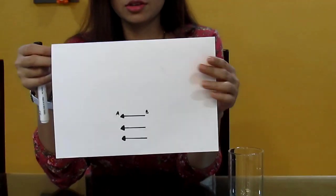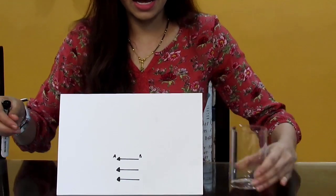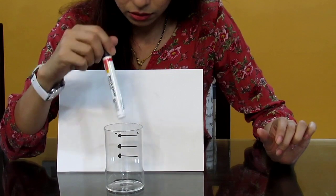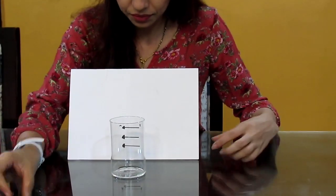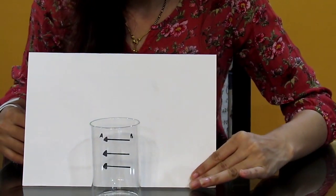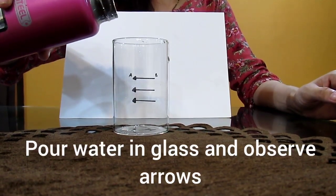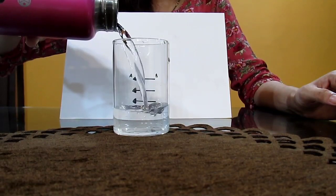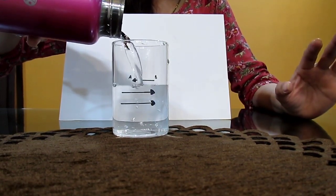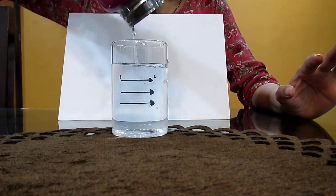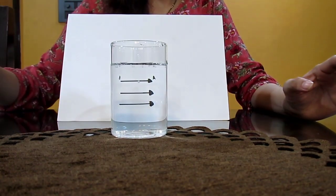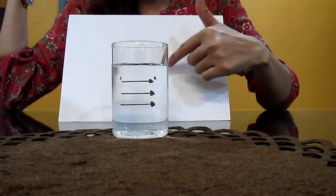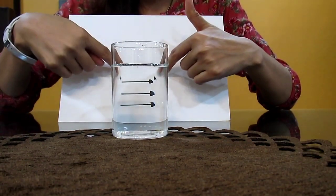Now place your paper like this and look at the arrows through the glass. The result is quite surprising. The moment I add water, all the arrows get flipped. You see, now A is on this side and B is on this side.